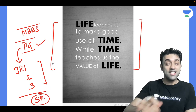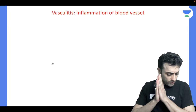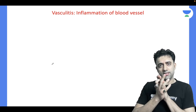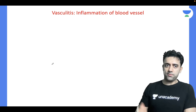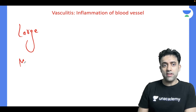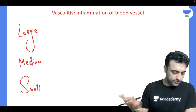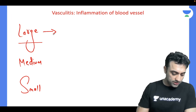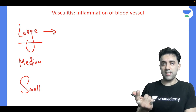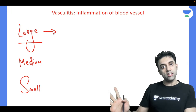Let's start. We have three types of vasculitis: large vessel vasculitis, medium vessel vasculitis, and small vessel vasculitis. Large vessel vasculitis examples are Takayasu arteritis and Giant Cell arteritis, also known as temporal arteritis. Revision is the key — remember that.